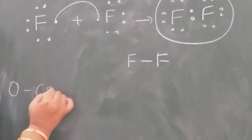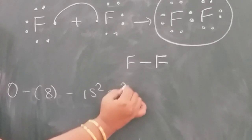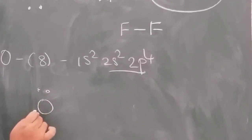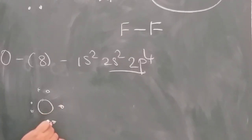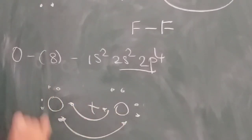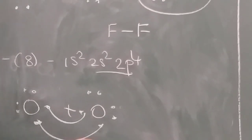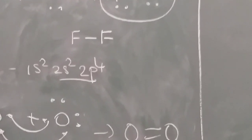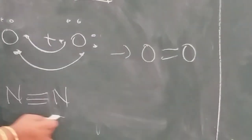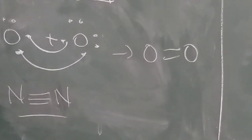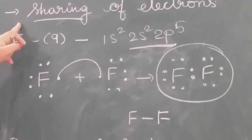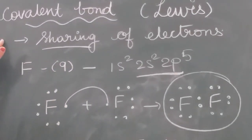Take example of oxygen: atomic number 8, configuration 1s2, 2s2, 2p4 — it has 6 electrons in the valence shell. Two oxygen atoms will share 2 electrons, so there is a double bond between oxygen and oxygen. If you take nitrogen, they will share 3 electrons, so there is a triple bond. In this way, atoms share electrons and form molecules. The bond formed due to sharing of electrons is known as a covalent bond.